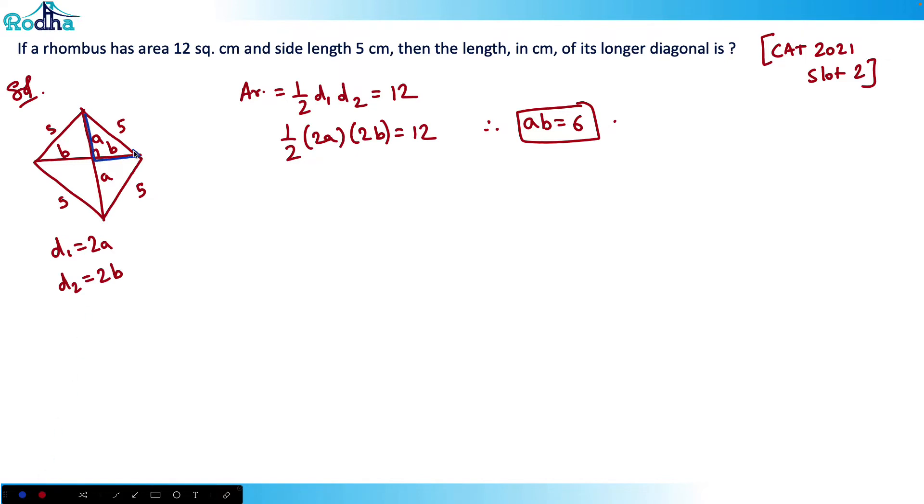I can apply Pythagorean theorem - under root A² plus B² will be equal to 5. Therefore A² plus B² is equal to 25 if I square both sides.